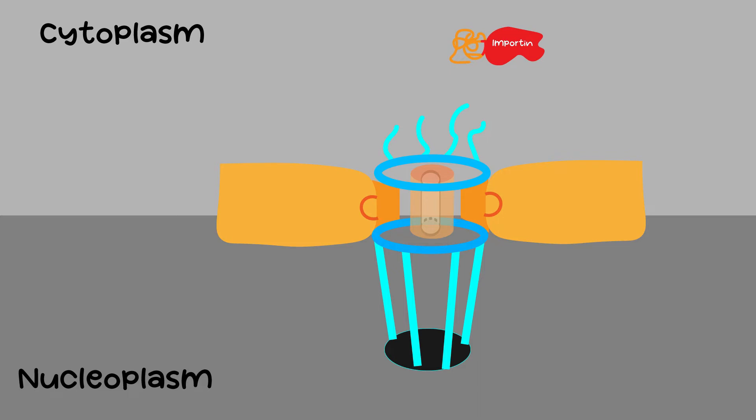On the way to the nucleus, importin binds to the cytoplasm filament, allowing the cargo to go through the nuclear proteins until it gets into the nucleus.